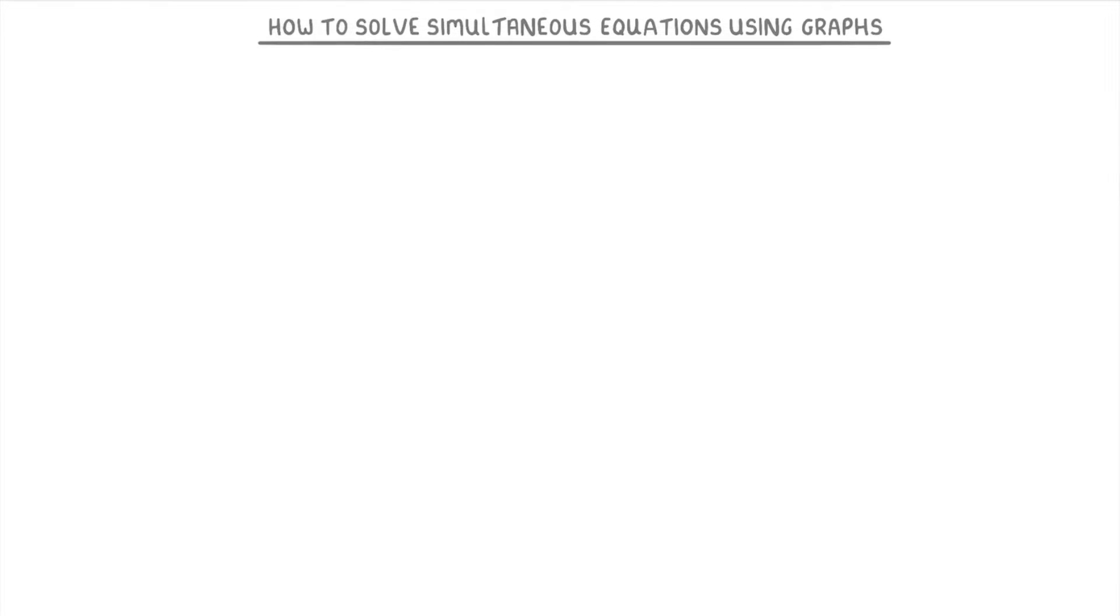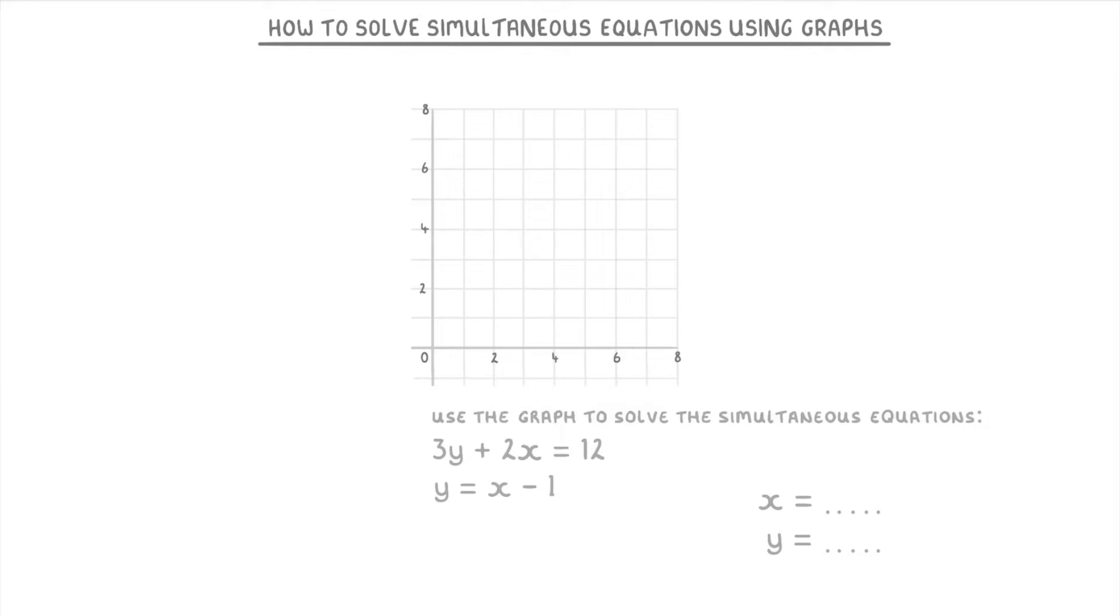In this video we're going to cover how to solve simultaneous equations using graphs. To recap, simultaneous equations are pairs of equations like these two that you have to solve by finding which values of x and y work for both equations. To solve them graphically, all you need to do is plot both line equations on a graph and see where they cross.